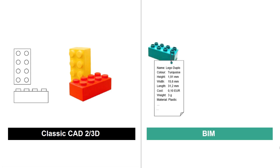BIM goes one step further. We still have a geometric representation of the Lego brick, but now we add information to it, such as the exact product name of the brick, the dimensions, weight, article number, and so on. This information is added in a structured form, and the software tools in the BIM environment can work with this information.